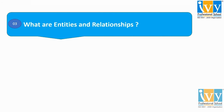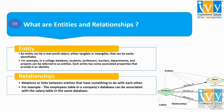Moving to the third question. Question 3: what are entities and relationships? An entity can be a real-world object with an existence. It can be either tangible or intangible and can be easily identified. In the diagram, a college database is given in which students, professors, workers, departments, and projects can be referred to as entities. Each entity has some associated properties that provide it an identity.